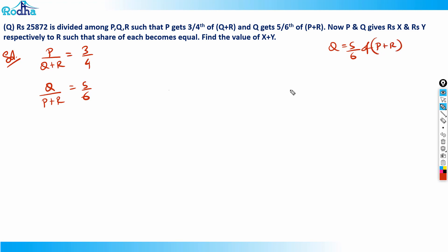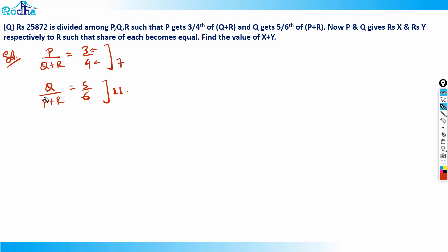So Q by P plus R equals five by six. Now when working with ratios, observe the numbers. If P gets 3 rupees then Q plus R gets 4 rupees, so the total becomes 7. If Q gets 5 rupees then P plus R gets 6 rupees, so the total becomes 11. In both cases, adding numerator and denominator gives P plus Q plus R, so both totals must be the same — but 7 and 11 are different, so I need to make them equal.